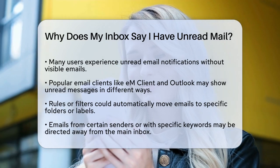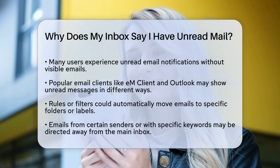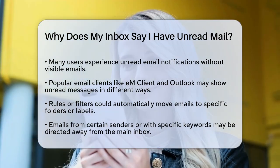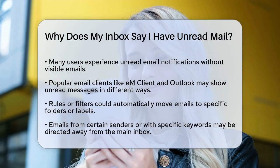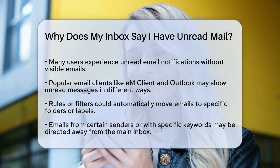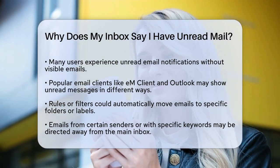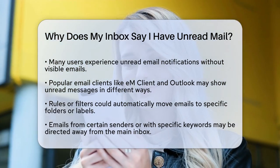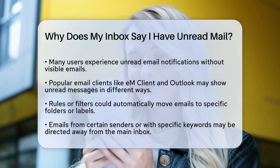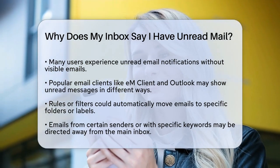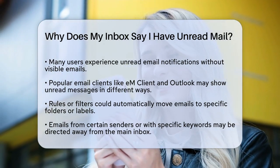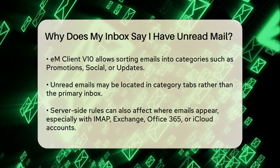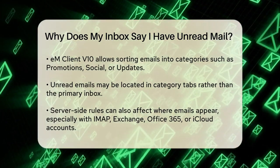Let's talk about email clients like EM Client and Outlook, which are popular for managing your emails. In these clients, there are a few reasons why you might see unread emails that don't appear in your main inbox. One common reason is due to rules or filters you might have set up. These rules can automatically move incoming emails to specific folders or labels. For example, if you have a rule to move emails from certain senders or with specific keywords to a different folder, those emails will only show up in the unread folder and not in your main inbox.